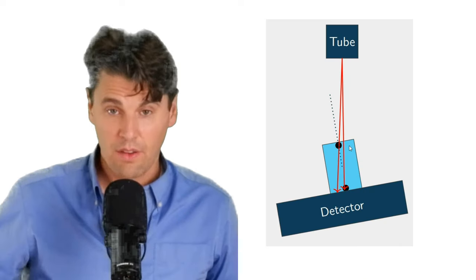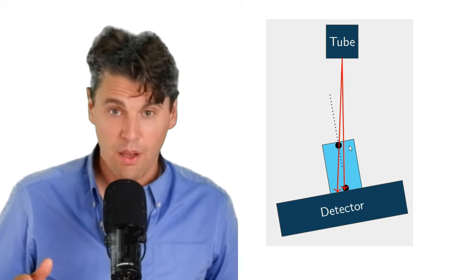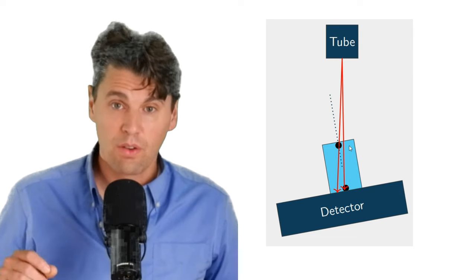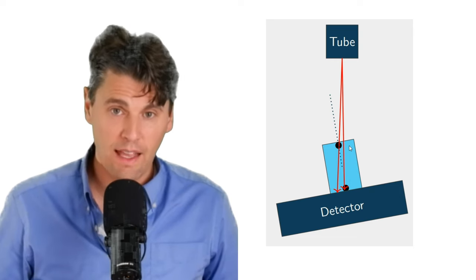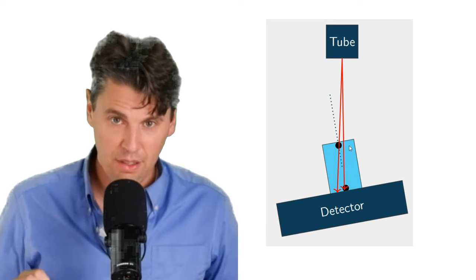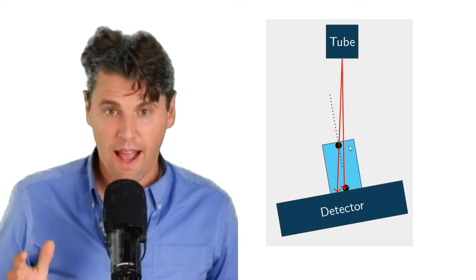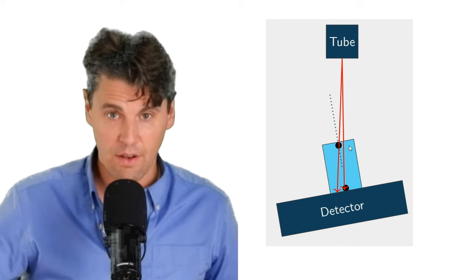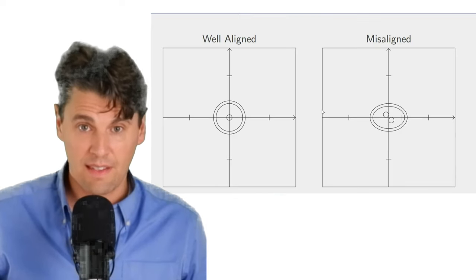When we make an image, they're actually going to lie right on top of one another. Now our detector and our tube, we do not have good central ray alignment. You can see, if you think of a line from the x-ray tube through the top BB and a line from the x-ray tube through that bottom BB, they're actually going to lie in different places on the detector.